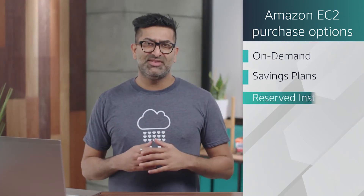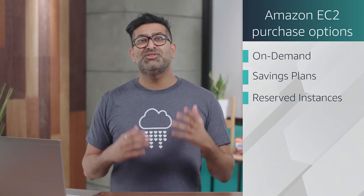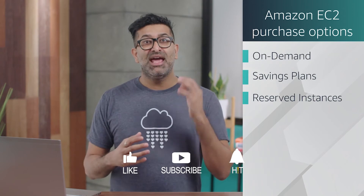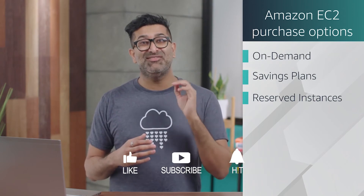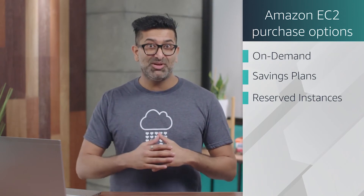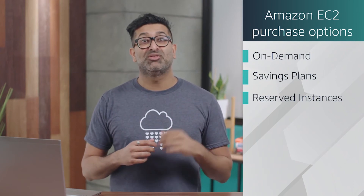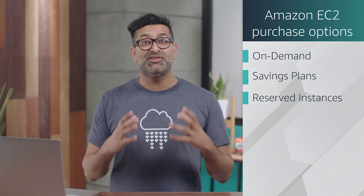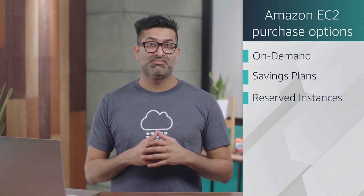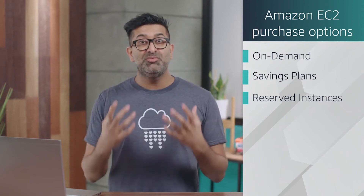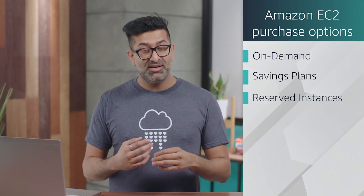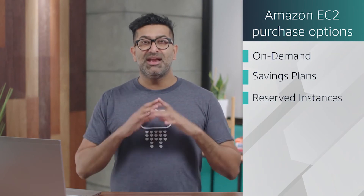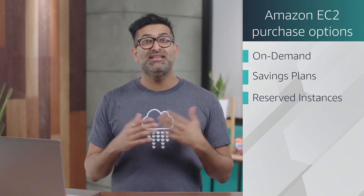Another option is reserved instances. These are suited for steady-state workloads, or ones with predictable usage, and offer you up to a 75% discount versus On Demand pricing. You qualify for a discount once you commit to a one- or three-year term and can pay with three payment options: all upfront, where you pay in full when you commit; partial upfront, where you pay a portion when you commit; and no upfront, where you don't pay anything at the beginning.